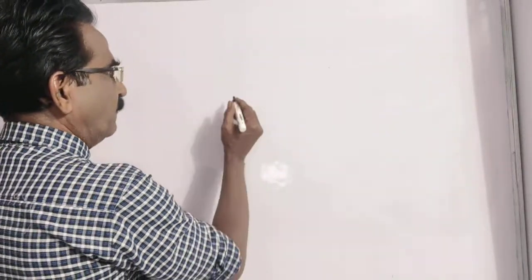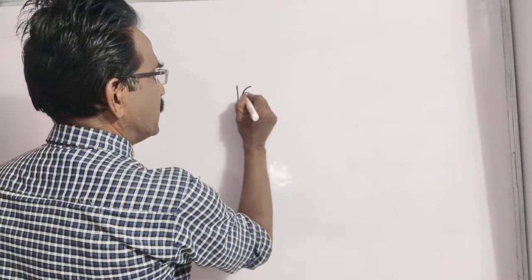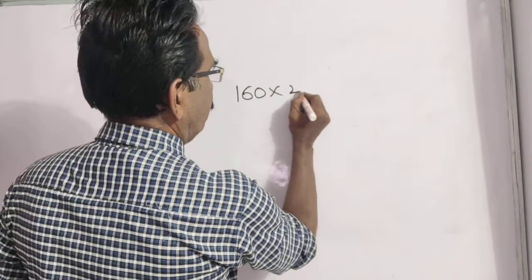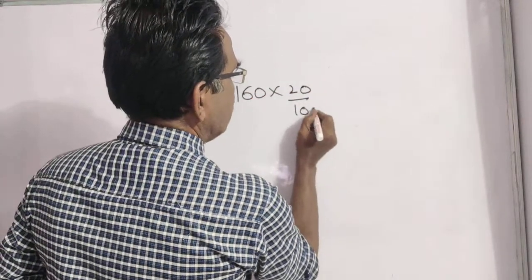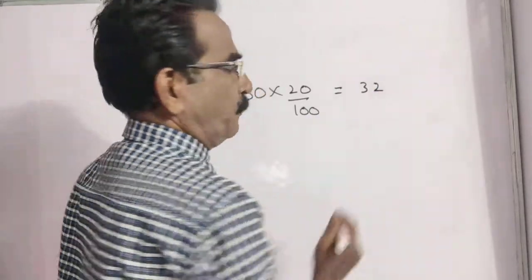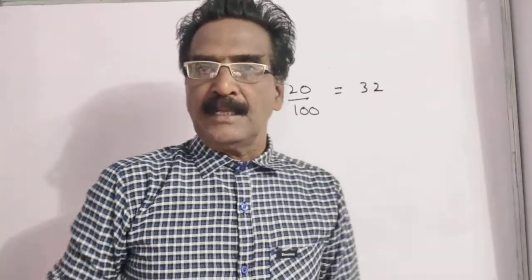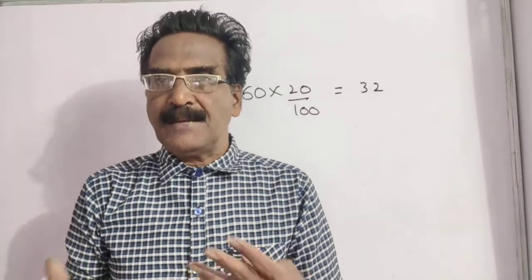Today there is a reduction of 20 percent in the price. What is 20 percent of 160? 20 percent of 160 is equal to 32 rupees.